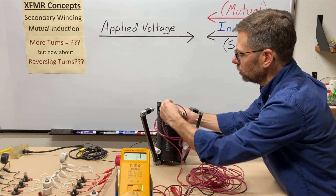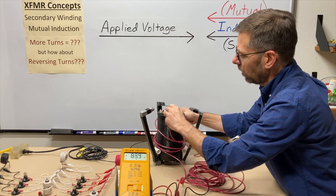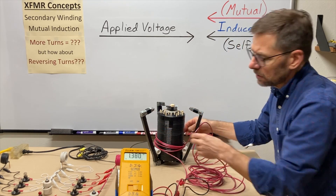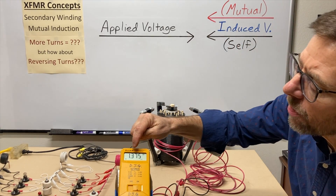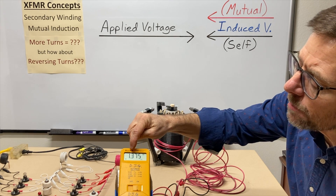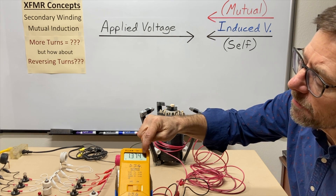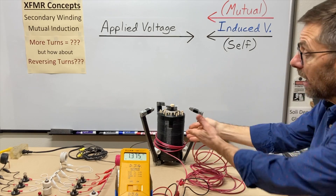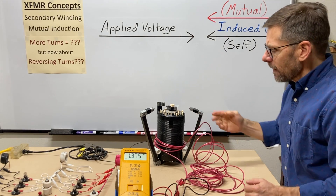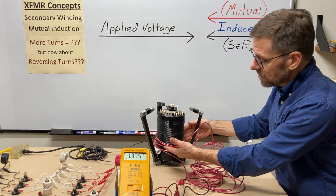I'll put on one, two, three, four, five turns and push those down. We're reading 1.3 volts — there's a decimal point right in there — and a little sine wave symbol implying it's AC. So somehow it does create some voltage.